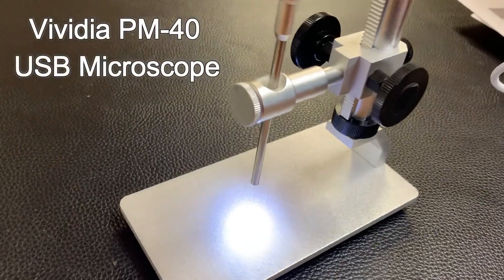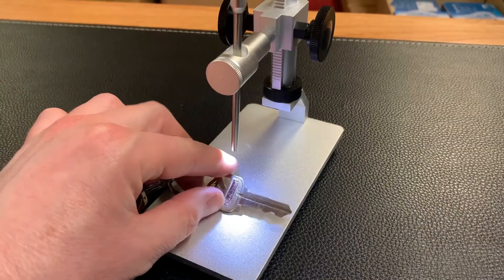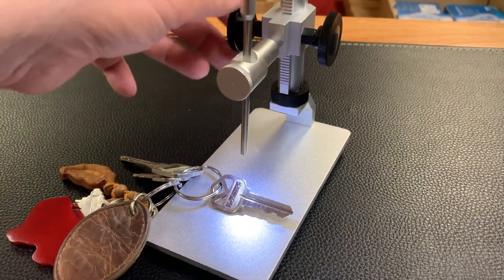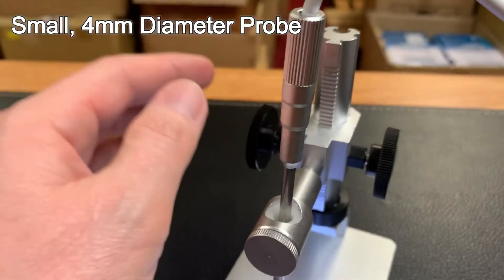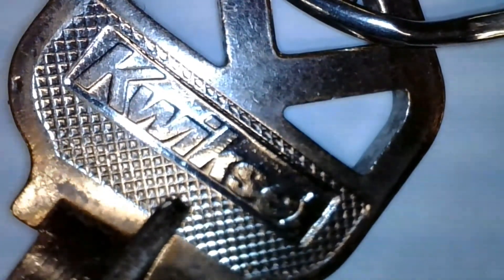The Vividia PM40 Manual Focus USB Pen Type Digital Microscope Boroscope is both a microscope with a maximum magnification of 150 times and a boroscope with a rigid small diameter of less than 4 millimeters.